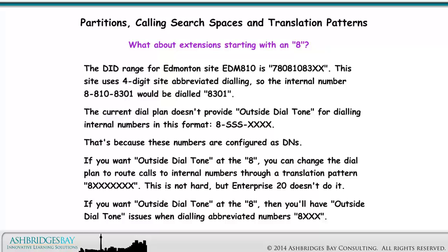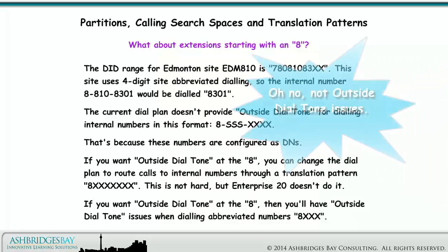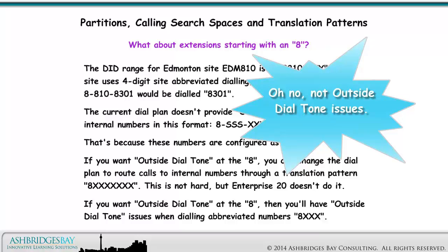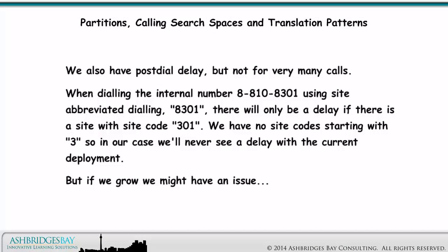If you want outside dial tone at the 8, you can change the dial plan to route calls to internal numbers through a translation pattern 8-XX-XXXX. This is not hard, but Enterprise 20 didn't do this. If you want outside dial tone at the 8, then you'll have outside dial tone issues when dialing abbreviated numbers 8-XXXX. We also have post-dial delay, but not for very many calls. When dialing the internal number 8-810-8301 using site abbreviated dialing 8301, there will only be a delay if there is a site with site code 301. We have no site code starting with 3, so in our case we'll never see a delay with the current deployment. But if we grow, we might have an issue.